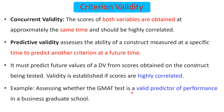For example, assessing whether the GMAT test is a valid predictor of performance in a business graduate program — GMAT scores are taken for candidates applying to a master's program. If the GMAT test predicts the students' future academic performance, predictive validity is ensured; if not, predictive validity cannot be established.